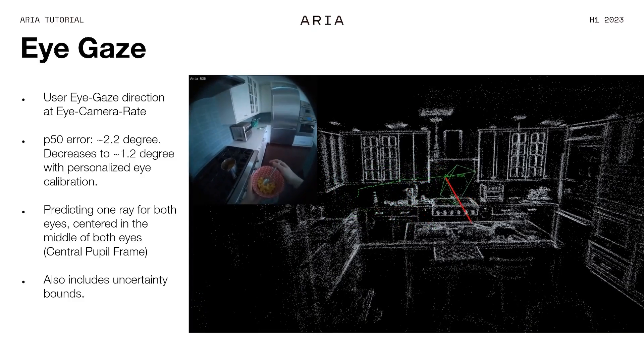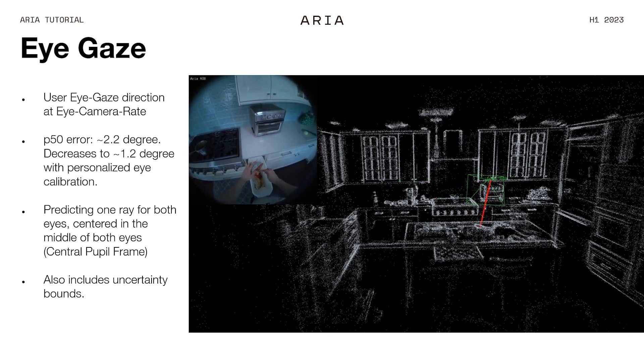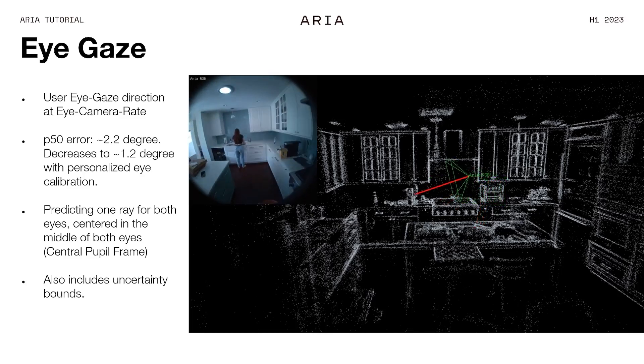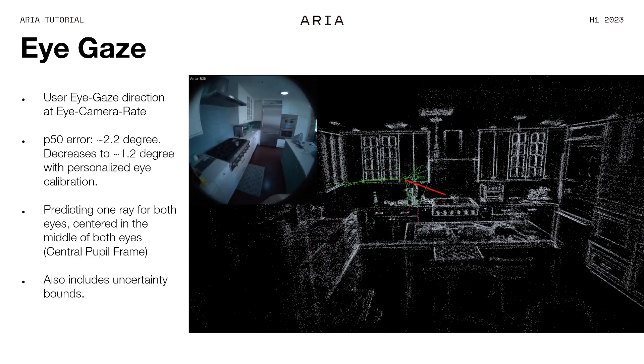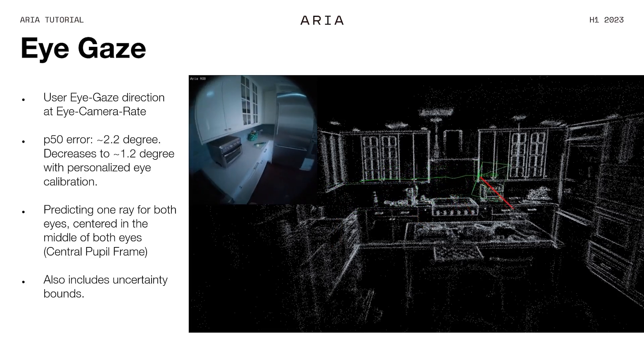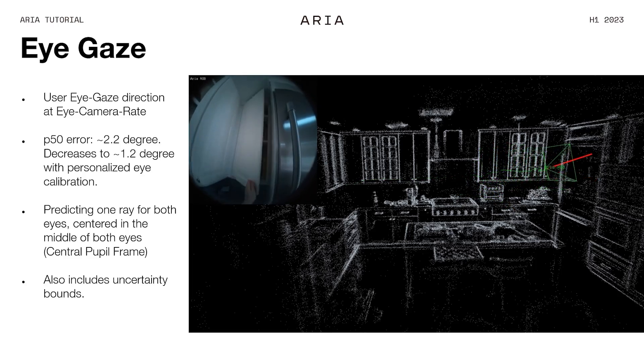So much for the outward-facing sensors. Now, very important is what the user is doing in the scene. One of the most important signals about what the wearer actually cares about is eye tracking. We provide eye tracking as a machine perception service, giving the eye gaze as a single ray anchored between your eyes pointing out into the scene, with an error of about 2 degrees — which goes down to about 1 degree if you do a personalized eye tracking calibration. You can see in the video how much information it gives you about what the person is actually up to; the eye gaze even precedes what they're doing, so you know what they're about to do.